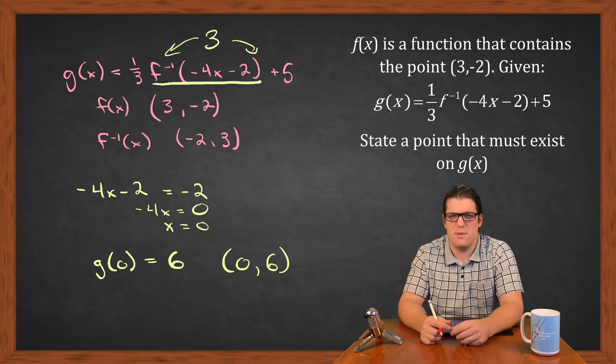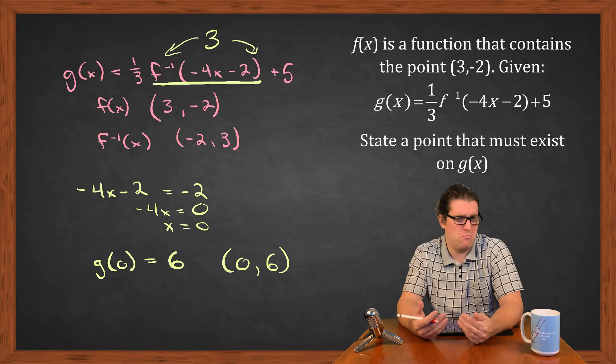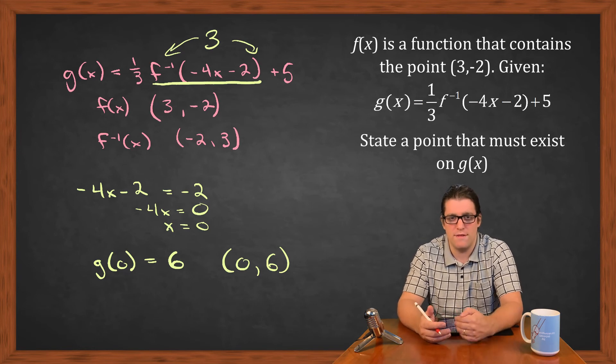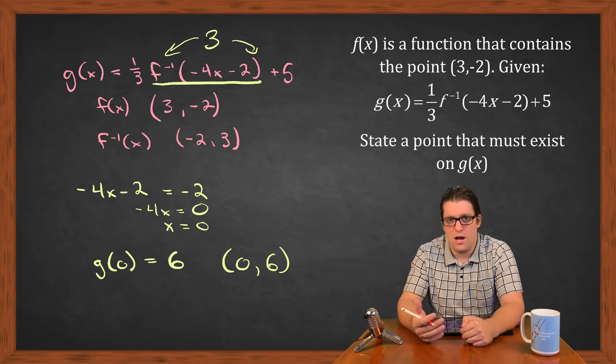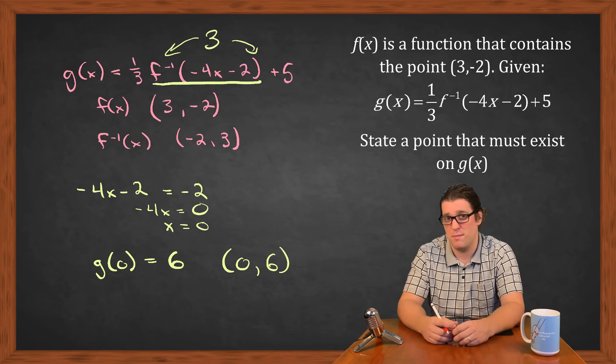Then we just have to basically stretch and move that y value by algebraically following what the stretch on the front and the shift is going to be from the end. So in this case we multiply by 1/3, add 5, and we got to that point.